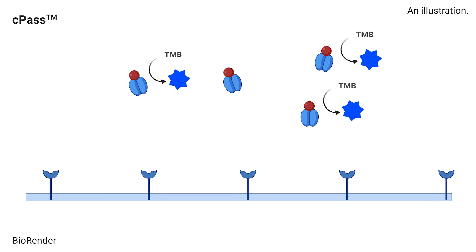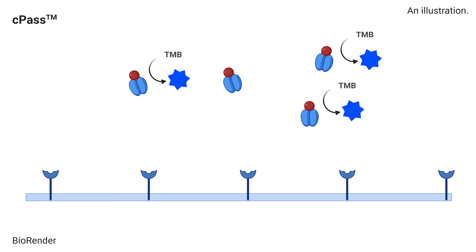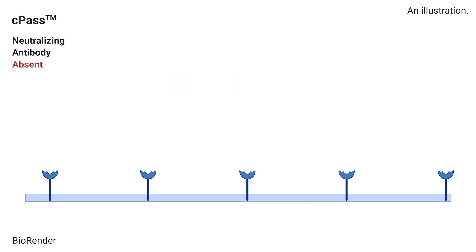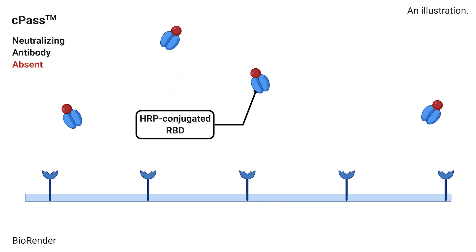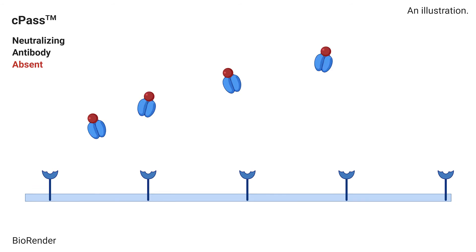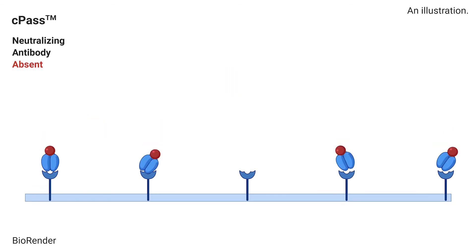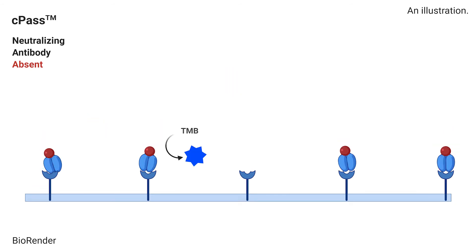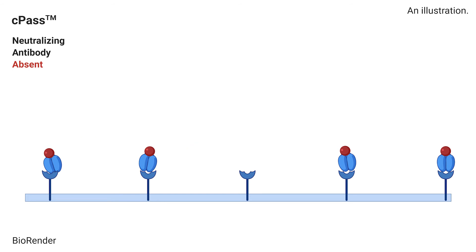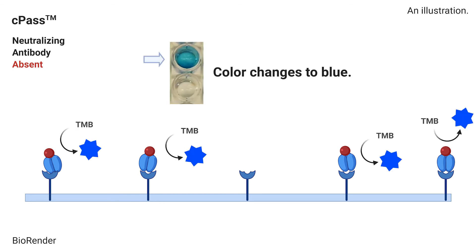If there are no neutralizing antibodies, the RBD will bind to ACE2 on the plate. We see this when the solution changes to a bright blue color. This is a negative test result.